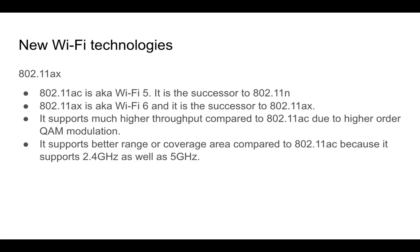Finally, I'm going to talk about some new Wi-Fi technologies. 802.11ax is also known as Wi-Fi 6. It's the successor to 802.11ac, also known as Wi-Fi 5, which was itself the successor to 802.11n. 802.11ax supports much higher throughput compared to 802.11ac due to a higher-order QAM modulation. It also supports better range and coverage because it supports 2.4 GHz as well — 802.11ac only supports 5 GHz — and we know that 2.4 GHz travels a lot farther than 5 GHz.